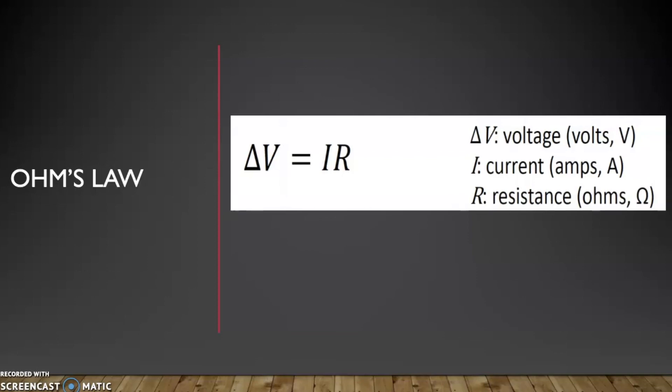As we increase the current, we also increase the voltage. If we increase resistance, we increase the voltage. We decrease one, we decrease the voltage. So as we increase current, again measured in amps A, we get more volts V.